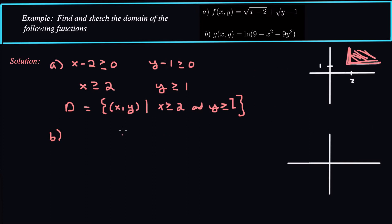Now for the second function, we need to have, let's see, we got a natural log. We know that natural log cannot take zero or negative numbers. So that means 9 minus x squared minus 9y